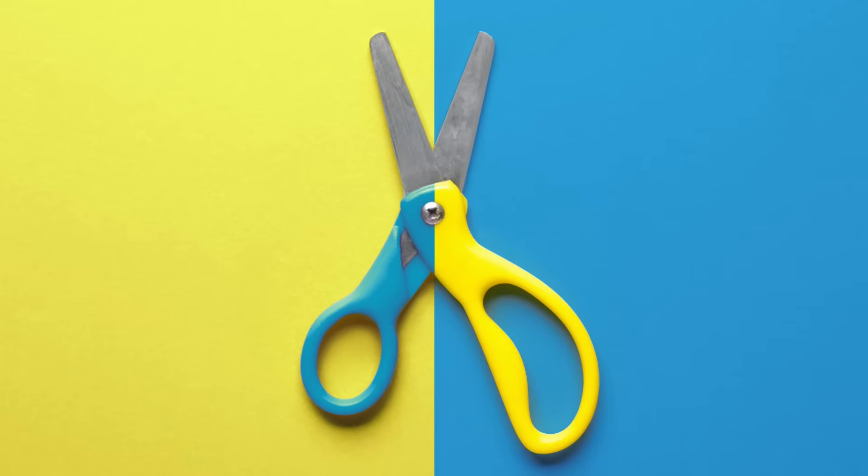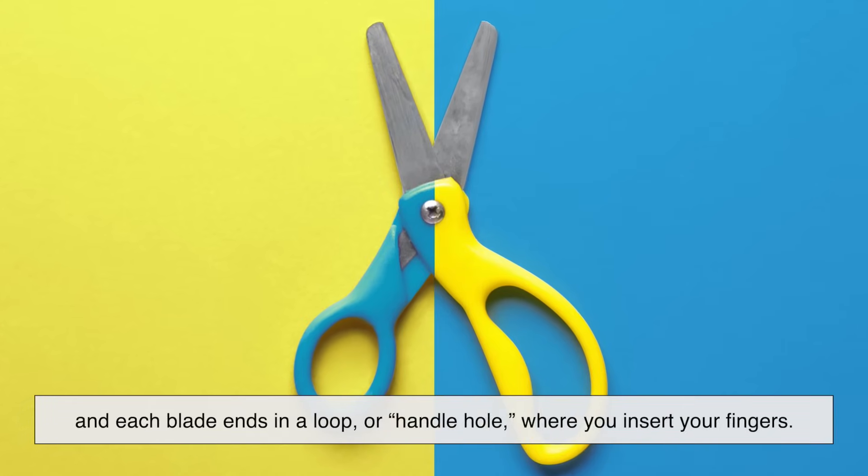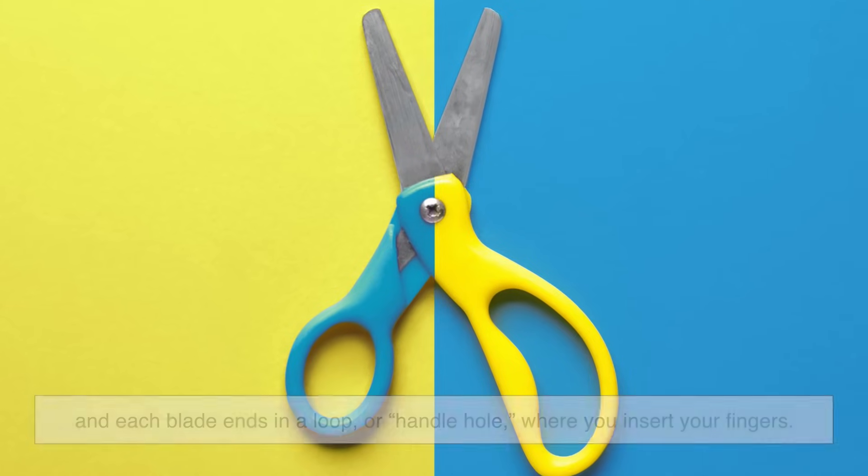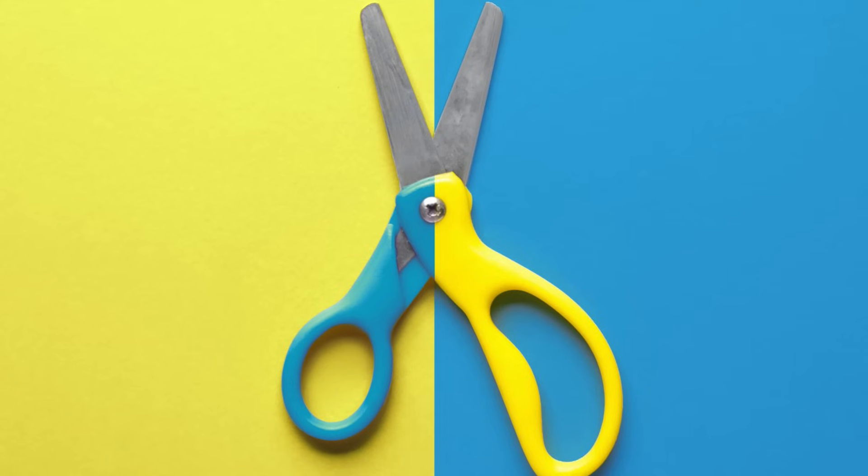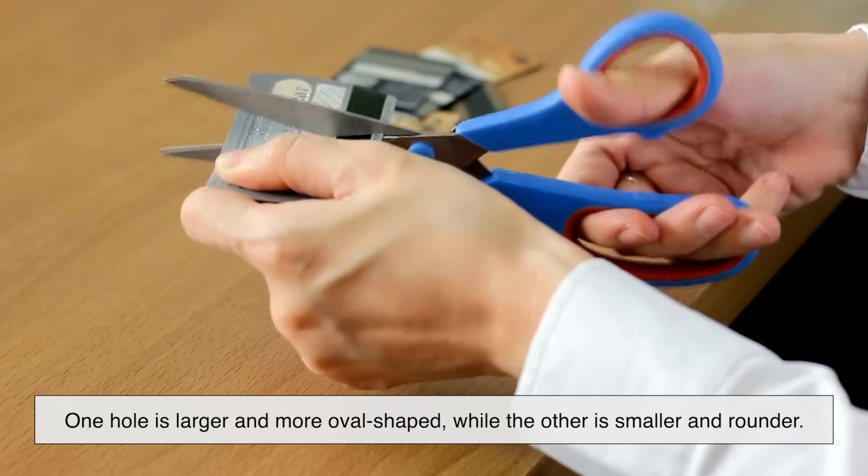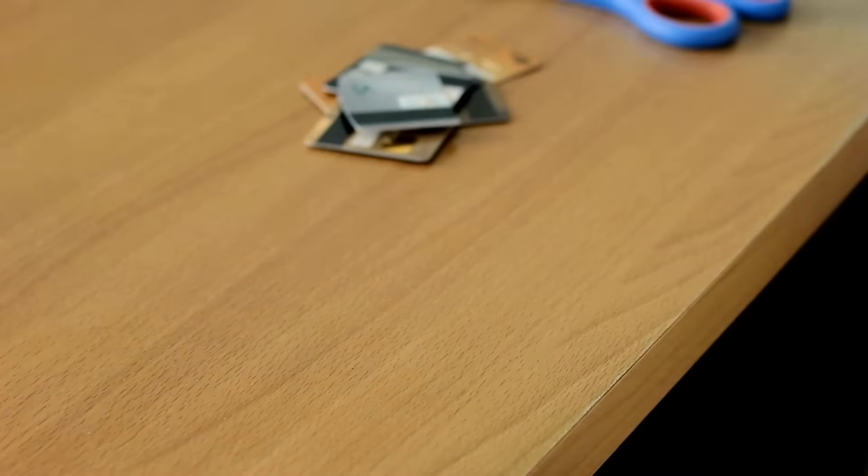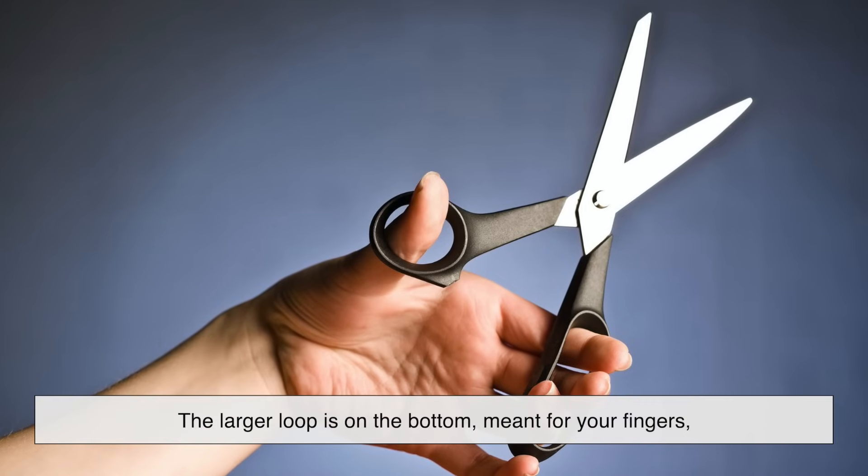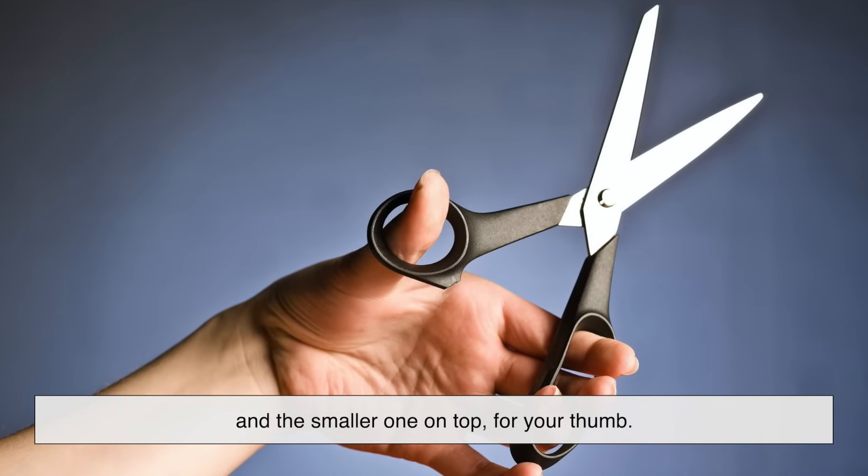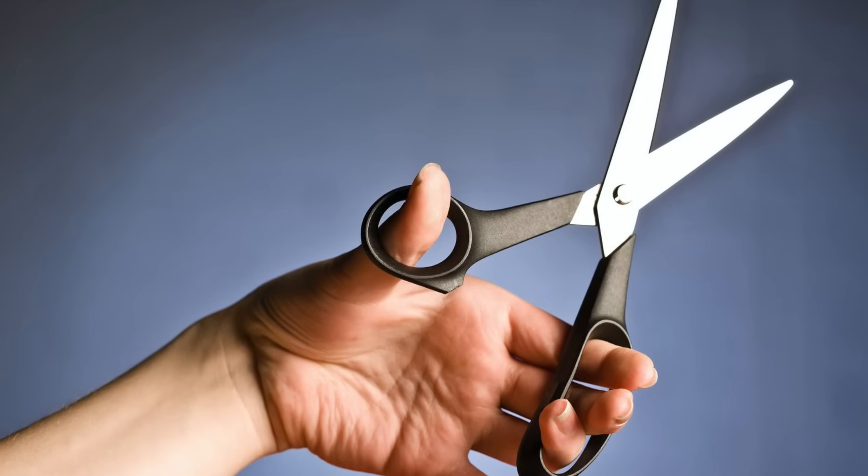Let's start with a quick anatomy lesson. Scissors have two blades joined in the center by a pivot, and each blade ends in a loop, or handle hole, where you insert your fingers. At first glance they seem symmetrical, until you realize the loops aren't the same size. Usually one hole is larger and more oval-shaped, while the other is smaller and rounder. For most right-handed scissors, the larger loop is on the bottom, meant for your fingers, and the smaller one on top, for your thumb.